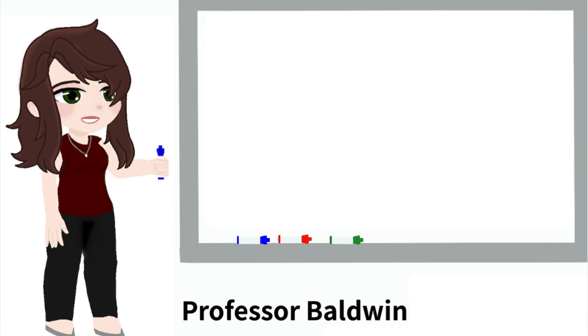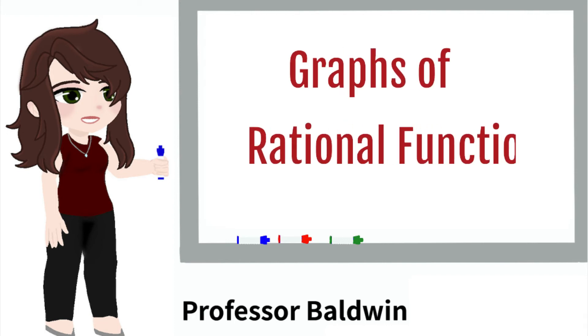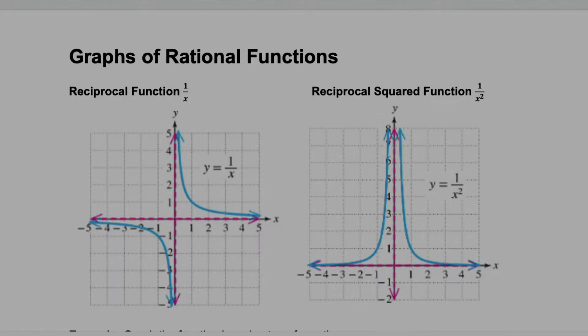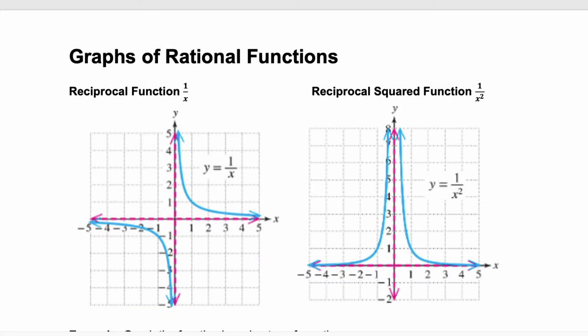Hi, I'm Professor Baldwin, and today I'm going to teach you how to graph rational functions. Here we have two rational functions: the reciprocal function, 1 over x, and the reciprocal squared function, 1 over x squared. These are the two mother functions or parent functions for rational functions.